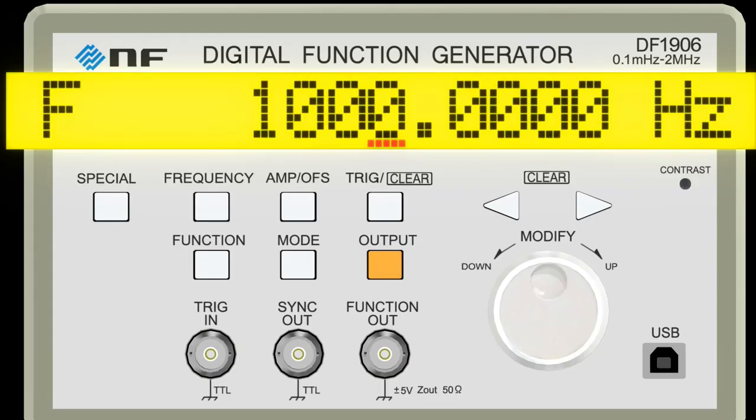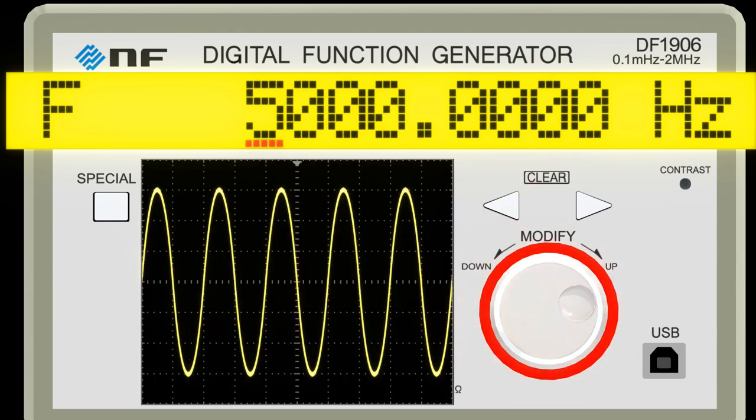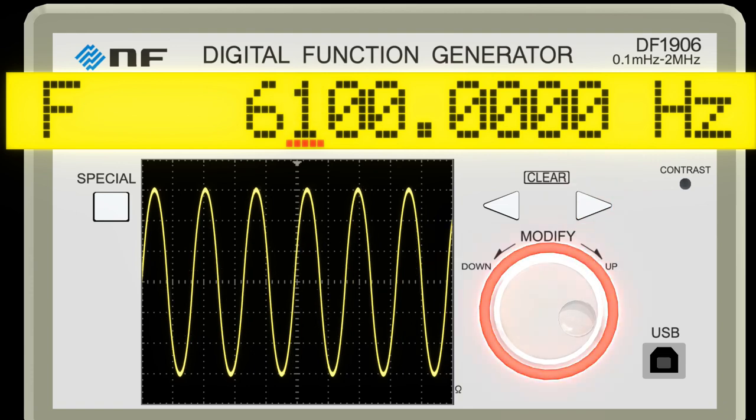If you want to output an AC signal of 6.5 kHz, for example, the unit is Hz, use the arrow keys to move the cursor to the thousandth place. Turn the Modify dial to set the number to 6, then press the right arrow key to move the cursor to the hundredth place, and use the dial to set the number to 5.